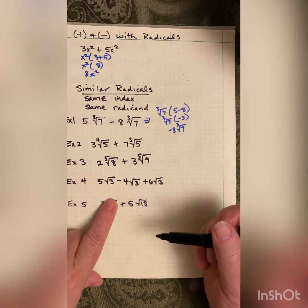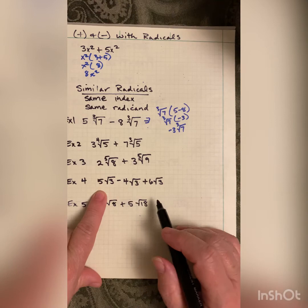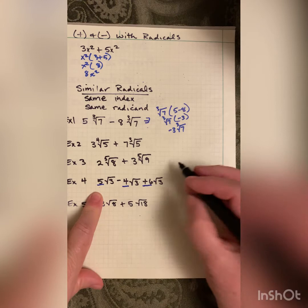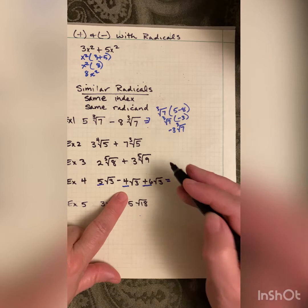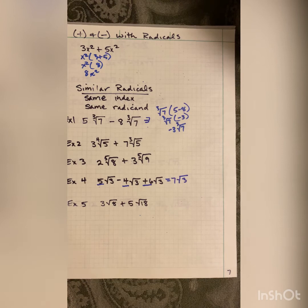Next example has multiple square root of 3 terms — they're all like terms, so let's combine the coefficients: 5 minus 4 gives 1, plus 6 gives 7. The result is 7√3.